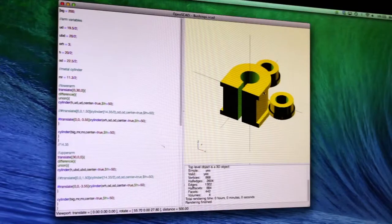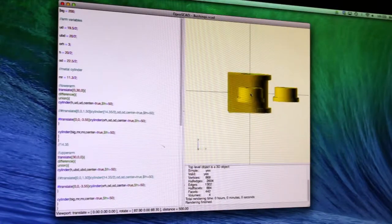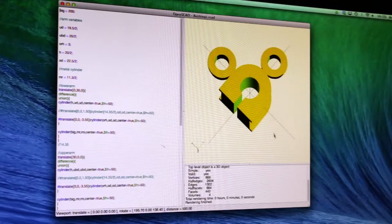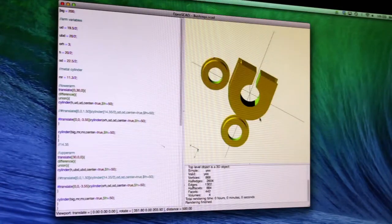We did the round bushings in halves to make them easier to print, so we don't have to use support material or anything like that. And from there, we can send the files to the printer.